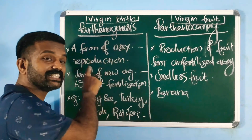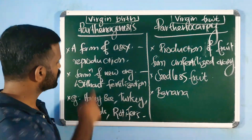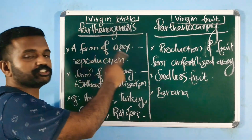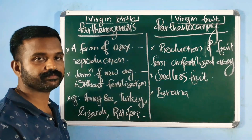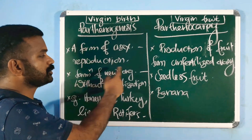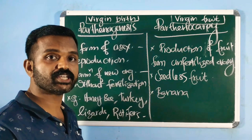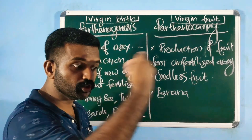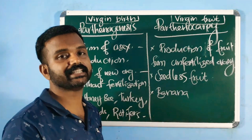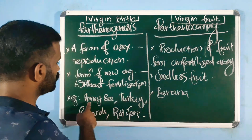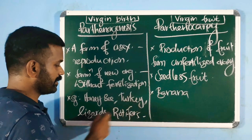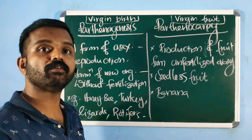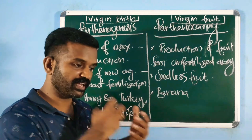Parthenogenesis is a form of asexual reproduction without fertilization. It is the formation of new organisms without fertilization, which is why it is known as virgin birth. Examples include some species of honeybee, turkey, lizards, rotifers, etc.